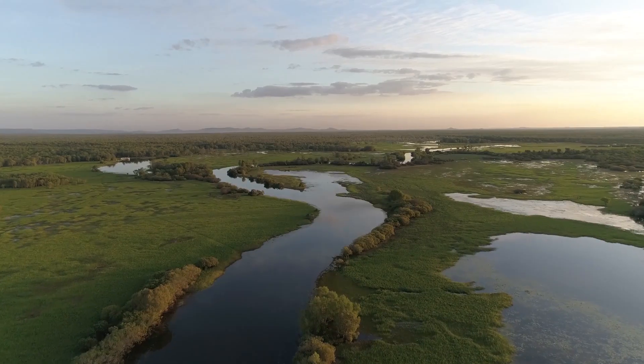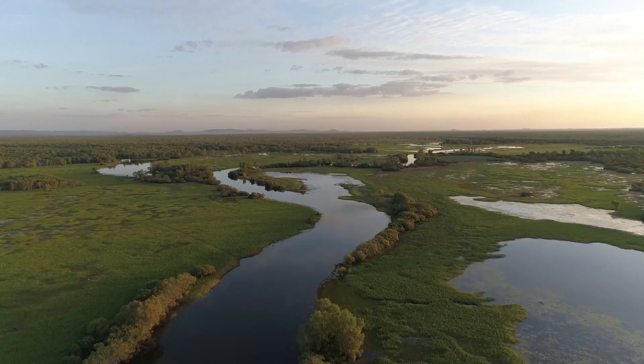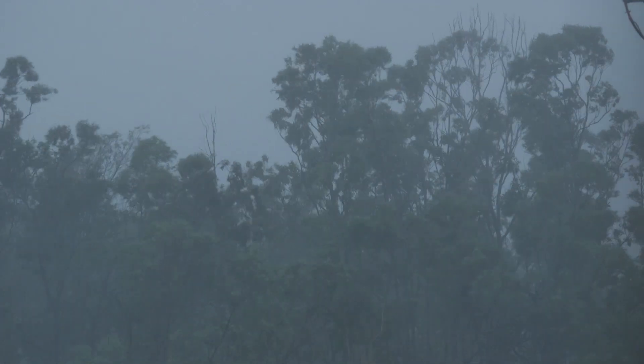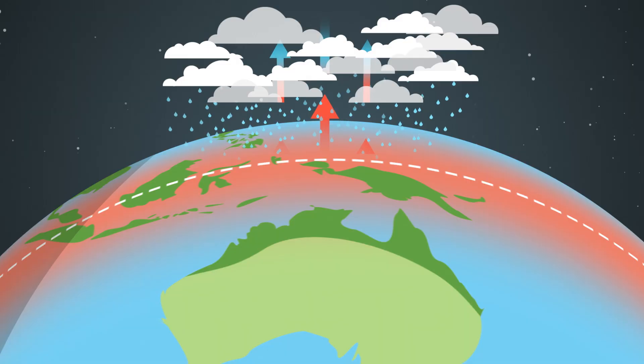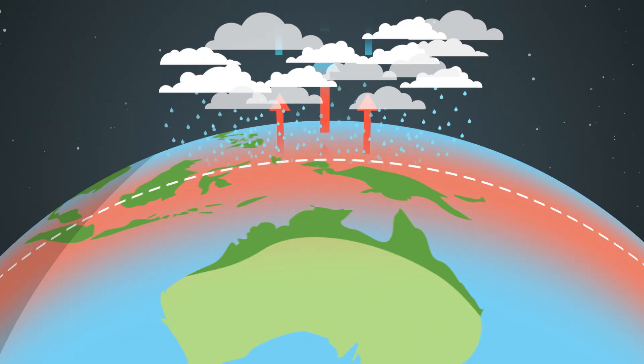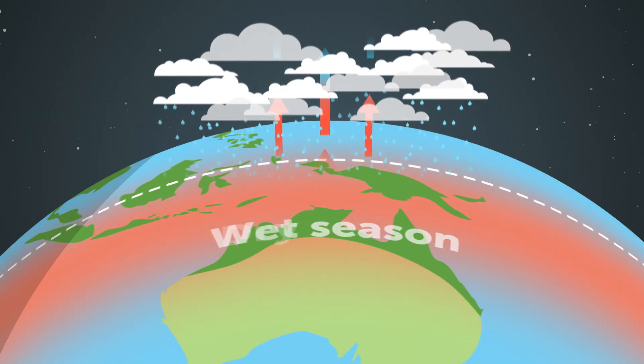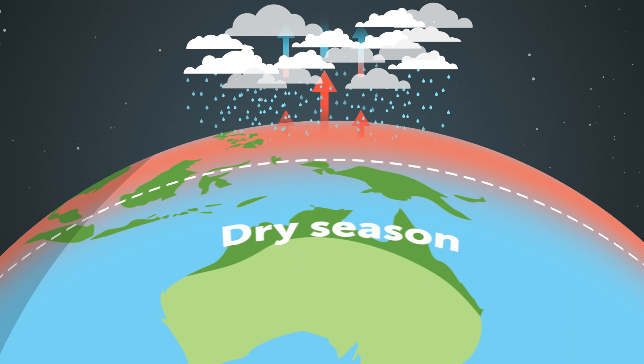The warm air cools as it rises and the water in the air condenses and then falls as rain. It makes sense then that the tropical zone — places like Cairns or Darwin — are warm and humid for most of the year, with a clear wet and dry season as the tropical rain belt shifts south and north of the equator.